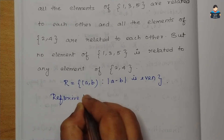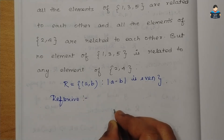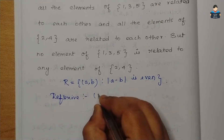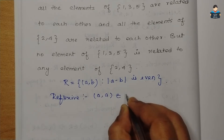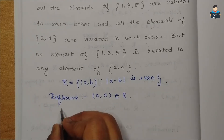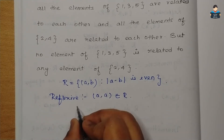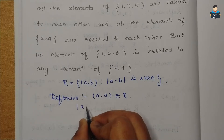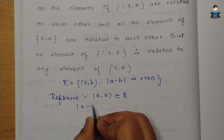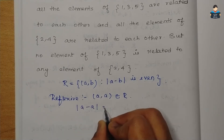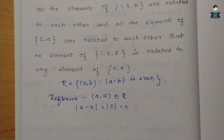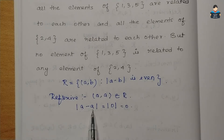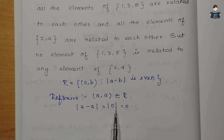For the reflexive condition, we need (a, a) to belong to R. The reflexive condition: modulus of a minus a is equal to modulus of 0, which is equal to 0.